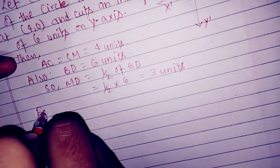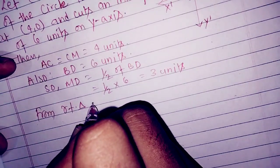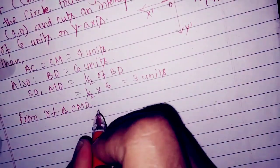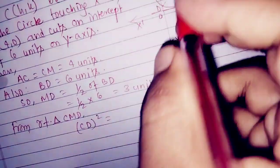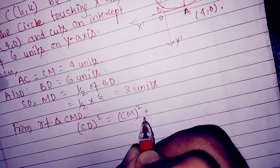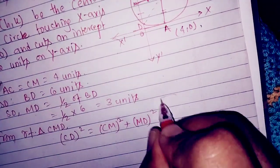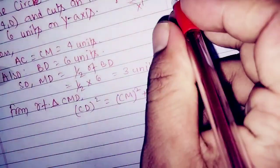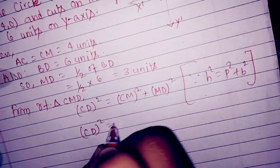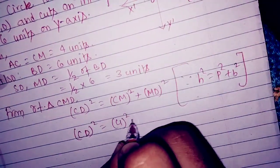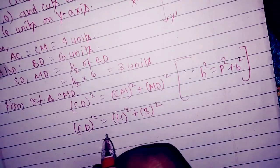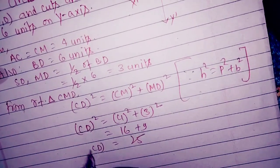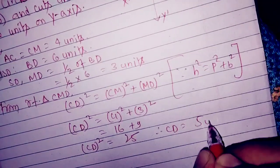From right-angle triangle CMD, CD² equals CM² plus MD², because hypotenuse squared equals base squared plus perpendicular squared. So CD² equals 4² plus 3², which gives 16 plus 9 equals 25. Therefore CD equals 5 units, which is the radius.